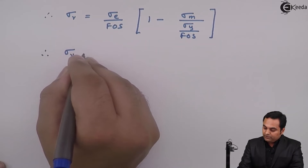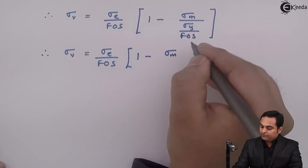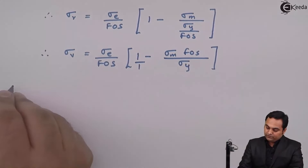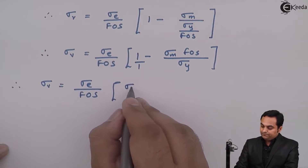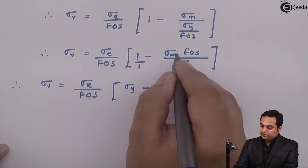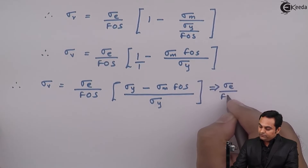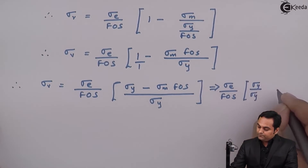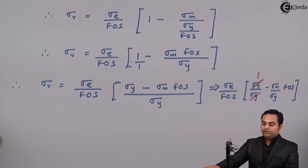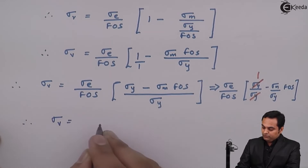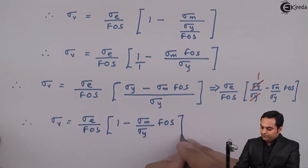Therefore, sigma_v equals (sigma_e / FOS) multiplied by the bracket: 1 minus (sigma_m · FOS / sigma_y). On simplification, this becomes sigma_e / FOS multiplied by (sigma_y minus sigma_m · FOS) over sigma_y. The sigma_y terms cancel, giving sigma_v equal to (sigma_e / FOS) times (1 minus sigma_m · FOS / sigma_y).